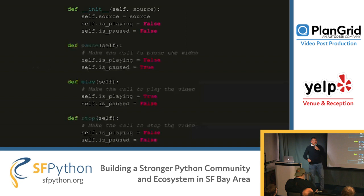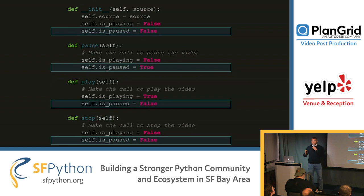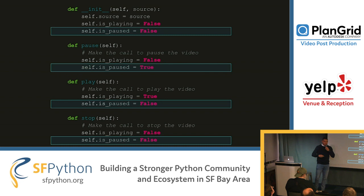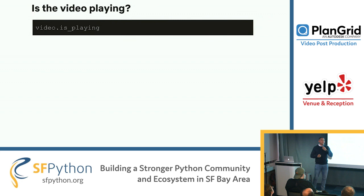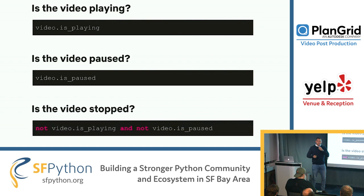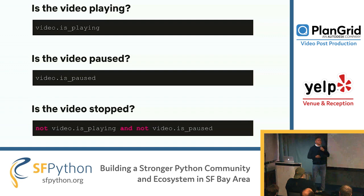So naturally, we'll go and create an is_paused attribute, initialized as false because the video is not paused once we create an instance. We modify our functions: when we call pause, is_paused is set to true; when we call play, is_paused is set to false; when we call stop, is_paused is set to false. Now we can answer if the video is playing, if it's paused, and if it's stopped. But as you can see, this is already adding complexity — we have to check two attributes to answer one simple question. This code is also fragile: the moment you introduce a new state, that check is not true anymore.